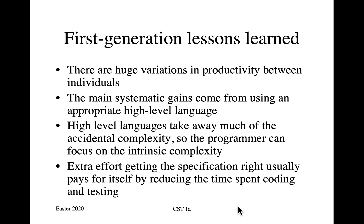The first-generation lessons learned by the 1970s were roughly as follows. First, there are huge variations in productivity between individuals. With manual labour like digging holes in the road, the biggest and strongest labourer might dig a trench two or three times faster than the weakest — but no more than that. With software, variations are very much larger. The best programmer in your company might write code at ten times the speed of the least productive programmer, and the real stars can be better than that still.